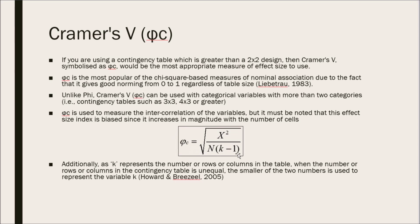Here is the formula for Cramer's V. It is the square root of the chi-square score divided by sample size times K, which here, K represents the numbers of rows or columns in the table. And when the number of rows or columns in the contingency table is unequal, the smaller of the two numbers is used to represent the variable K. And then that K is minus 1. And then the square root of the entire result of that.